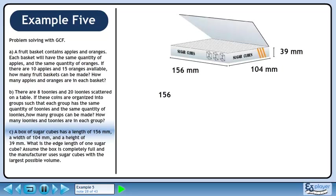Let's find the prime factors of 156 mm using a factor tree. 78 and 2 are factors of 156, 39 and 2 are factors of 78, 3 and 13 are factors of 39.